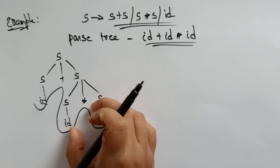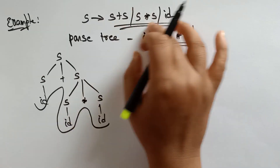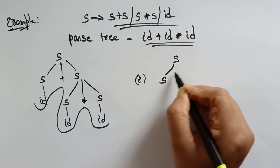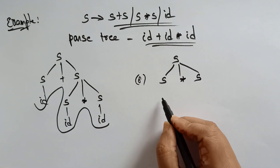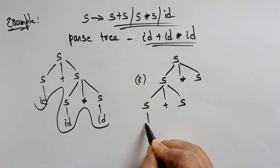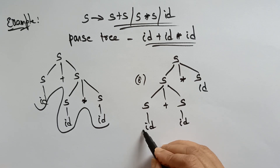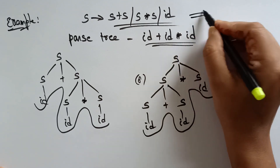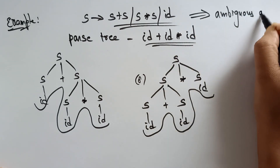Now these productions are generating one more parse tree. This time I am taking the second production s star s, and this s I can replace with s plus s. Then this is replaced with id, and it is also generating id plus id star id. So I can say the given grammar is an ambiguous grammar.